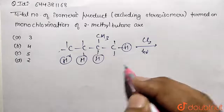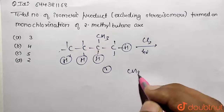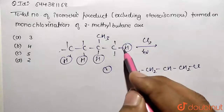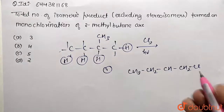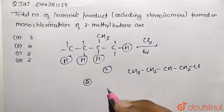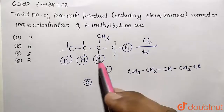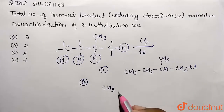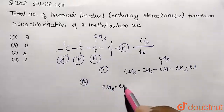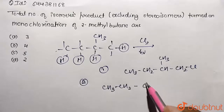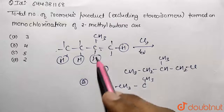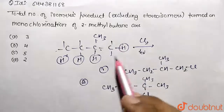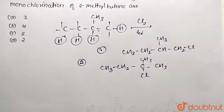So we are only considering the structural substitution products. First, placing chlorine at the terminal position gives: CH3–CH2–CH(CH3)–CH2Cl. This is the first product. The second product is obtained by substituting at the second position: CH3–CHCl–CH(CH3)–CH3, where the methyl group remains as in the original molecule but one H is replaced with Cl.